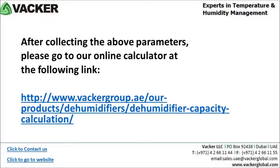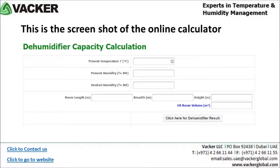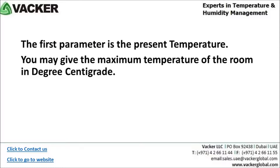After collecting the above parameters, please go to our online calculator at the following link. This is the screenshot of the online calculator. The first parameter is the present temperature — you may give the maximum temperature of the room in degrees centigrade.